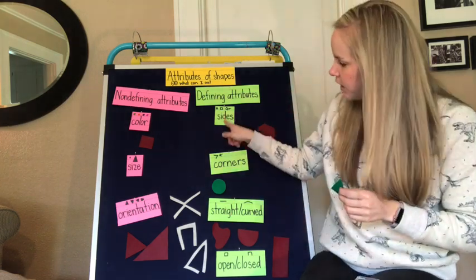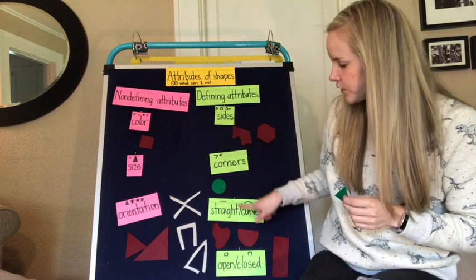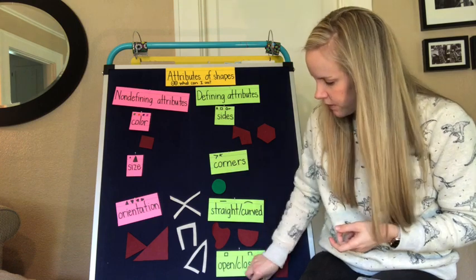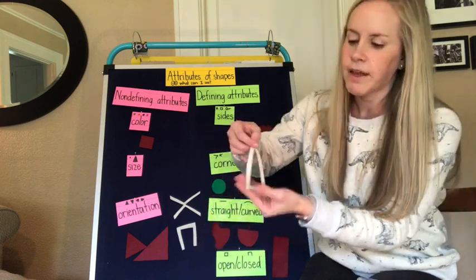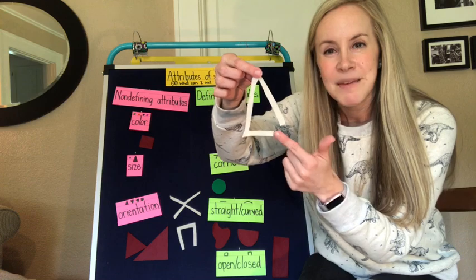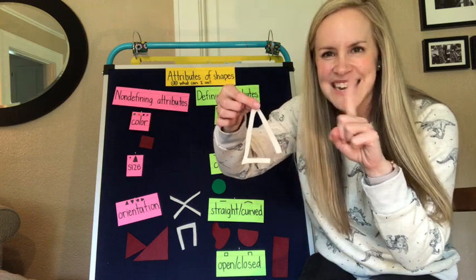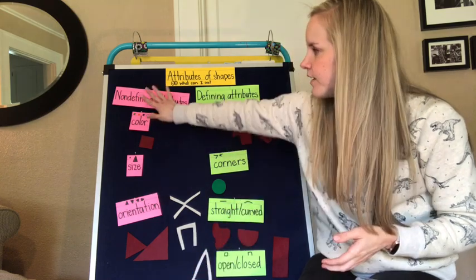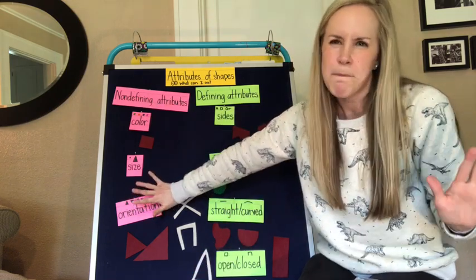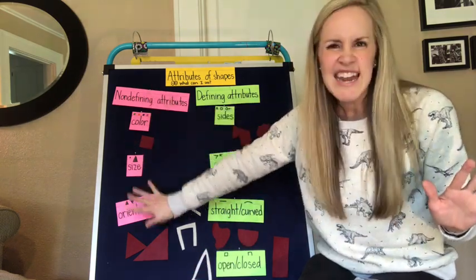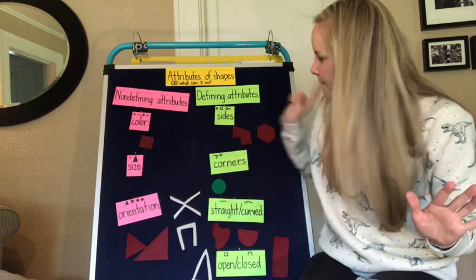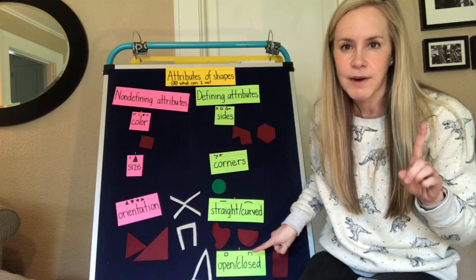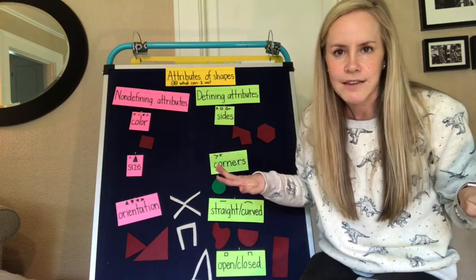So all of these things — sides, corners, straight and curved, and open and closed — make a shape a shape. For instance, this right here might look like a triangle, but it is open, so it is not a triangle. Non-defining attributes don't matter — a triangle could have any color, size, or orientation and still be a triangle. But these defining attributes it has to have exactly the right thing, otherwise it's not that shape.